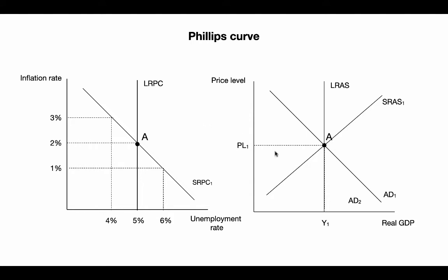Starting at point A, we have a standard negative demand shock — a drop in aggregate demand. We want to see what that looks like on the Phillips curve. We know we're going into recession, so unemployment is going to be rising, which means on the Phillips curve we're moving to the right. Since unemployment moves inversely to real GDP, we're moving in the opposite direction. We're moving along the short run Phillips curve, which is why it's called the short run — we have this trade-off between inflation and unemployment due to sticky wages.